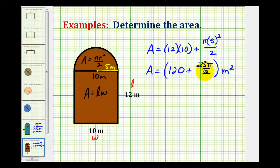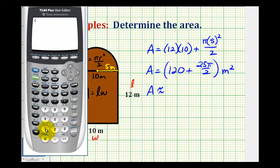And now we'll use the pi key on the calculator to get an approximate value of this area to the nearest hundredth. So we'll have 120 plus the numerator of 25 pi divided by 2. So the area is approximately 159.27 square meters.